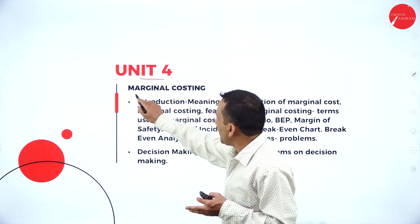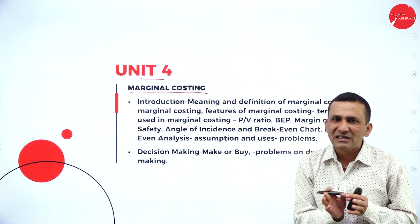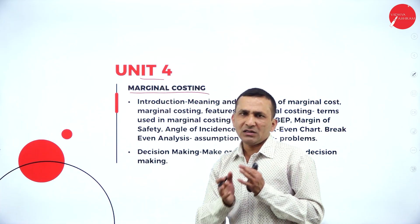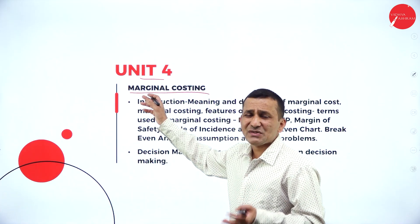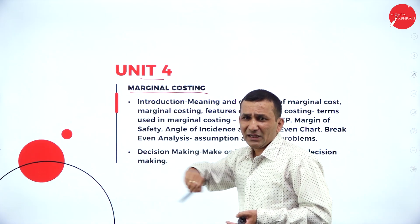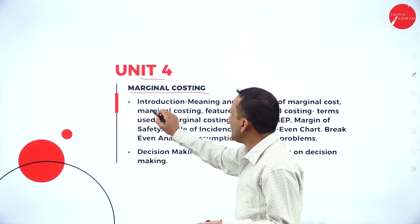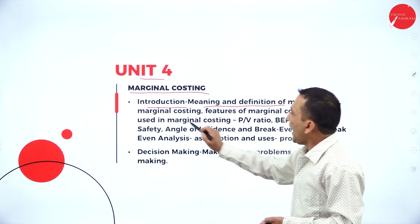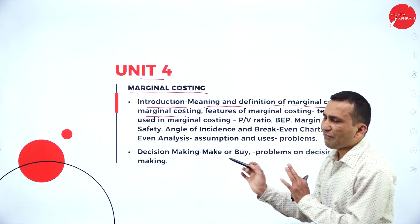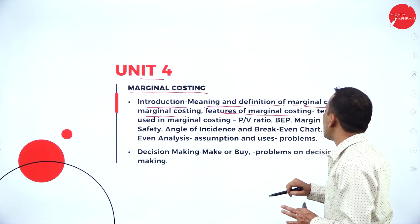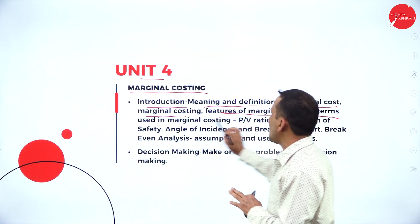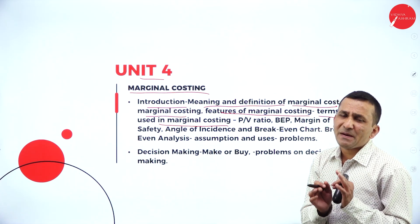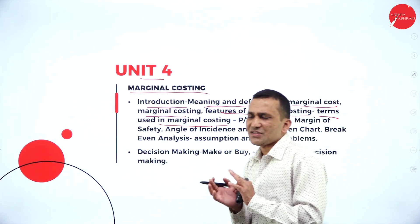The fourth unit is Marginal Costing. Marginal means additions or margin. This is the latest tool that every company's management is adapting. You will get to know the meaning and definition of marginal cost and costing — both are different. The features of marginal costing and all the terms used in it will be covered. You can expect a 15-mark or 10-mark question from this unit, 100%.